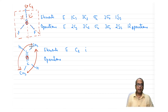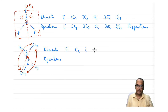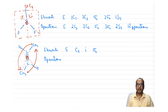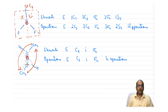Trans-2-butene also has an inversion center i: passing a line from one atom through the center of the molecule reaches the equivalent atom on the other side. There is also sigma-h, the molecular plane. The total operations are: E, C2, i, sigma-h — four operations.